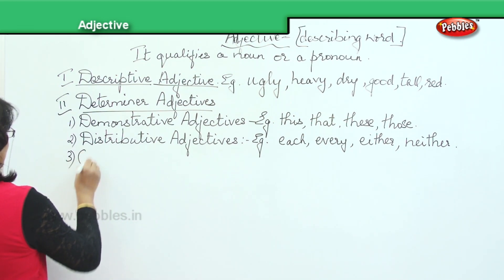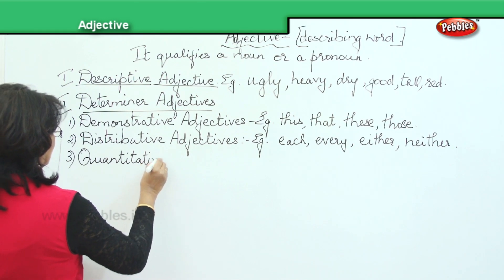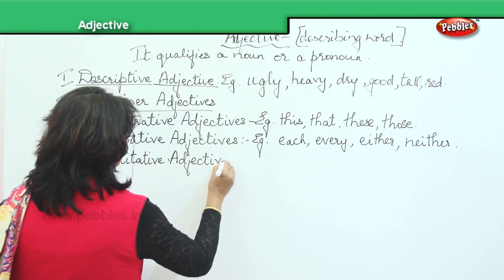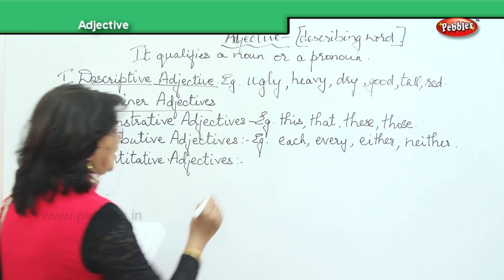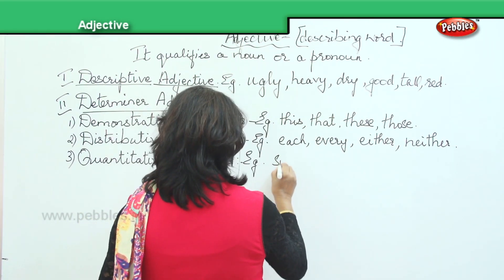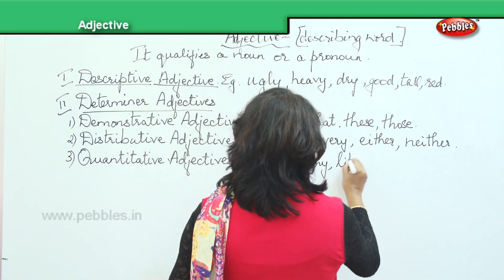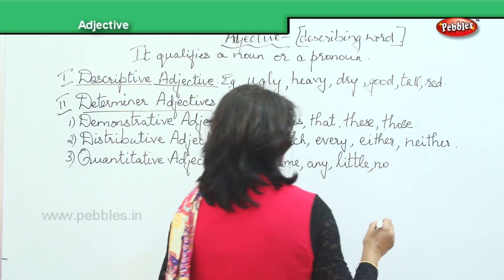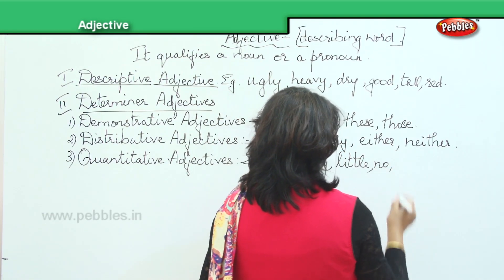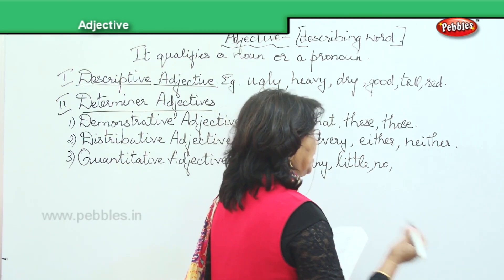Quantitative adjectives — for example: some, any, little, no, few, many, all, several. For instance: 'She had no rice,' 'She had little rice,' 'She had some milk,' 'She had some pens.'